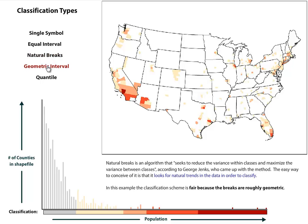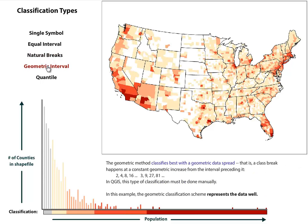The next one is geometric interval, and this is the one we started out on — I think it does a pretty good job. What's nice is that it shows more variation. Geometric means it's going up either doubling or tripling, by the exponent 2, 4, 8, 16, 32 — that kind of thing. So you get a spread where it's assuming almost that your data set might have a geometric spread going on. And because we have a geometric spread in our data, the geometric interval classification scheme seems to work the best.